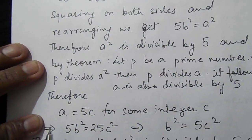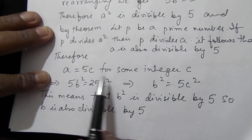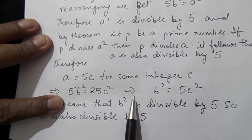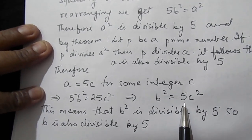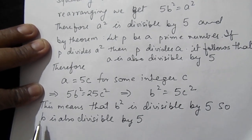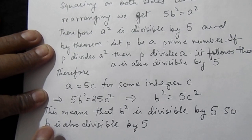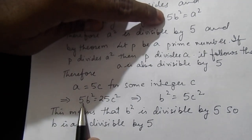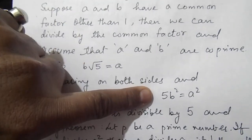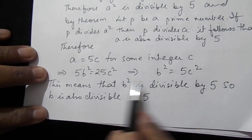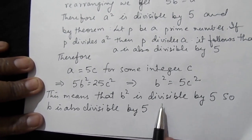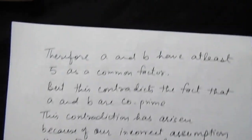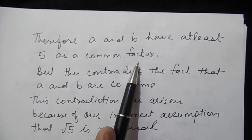Since a is divisible by 5, we write a = 5c for some integer c. Substituting back into 5b² = a², we get 5b² = 25c², which gives b² = 5c². This means b² is divisible by 5, so by Theorem 1.3, b is also divisible by 5. Therefore a and b have at least 5 as a common factor.